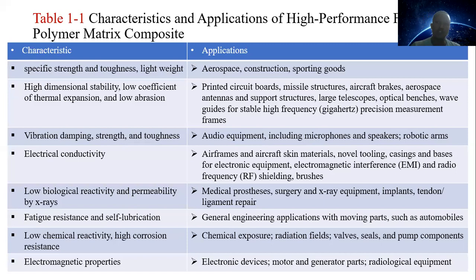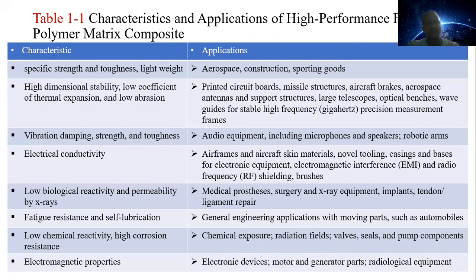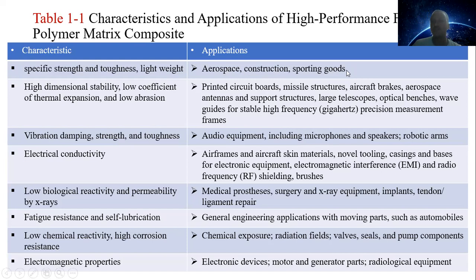This table shows the characteristics and applications of high-performance fiber-reinforced polymer matrix composites. The basic characteristics include specific strength and toughness — these composites made from carbon fiber and polymer matrix have good specific strength and toughness — as well as high specific stiffness, higher strength, and lightweight properties. Such materials are applicable in aerospace construction, sport goods, and lightweight automobile industries.